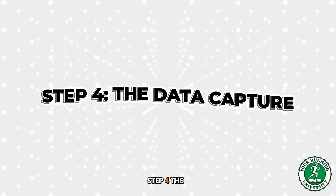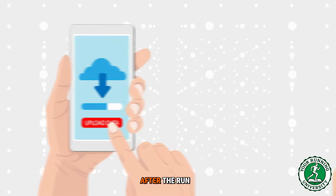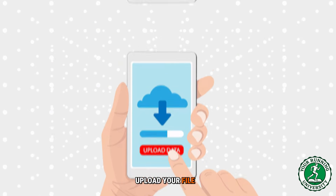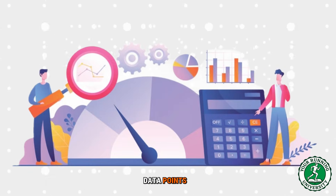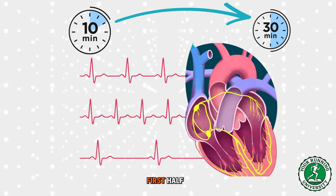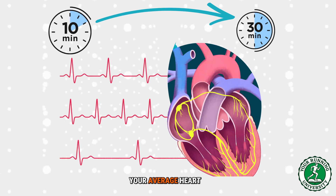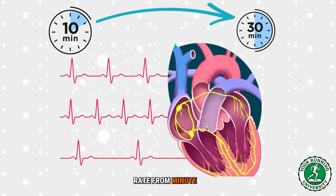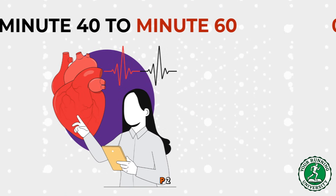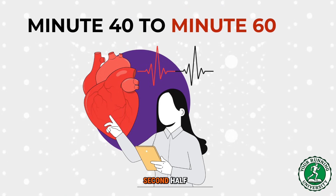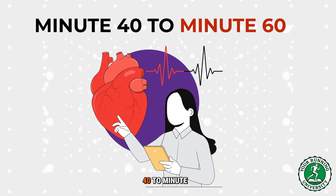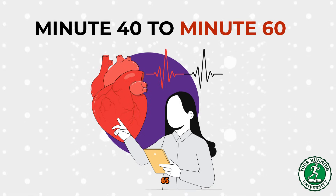Step 4, the data capture: after the run, upload your file. We are going to compare two data points. P1, first half — your average heart rate from minute 10 to minute 30. P2, second half — your average heart rate from minute 40 to minute 60.